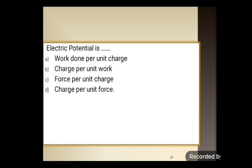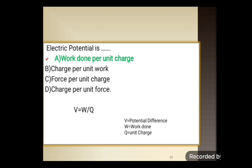Next question: electric potential is — first option: work done per unit charge; second: charge per unit work; third: force per unit charge; fourth: charge per unit force. The correct definition of electric potential is option A: work done per unit charge. The formula is V = W/Q, where V is electric potential, W is work done, and Q is the unit charge.